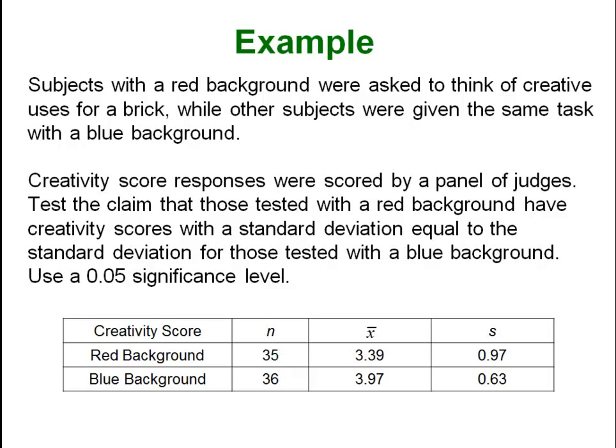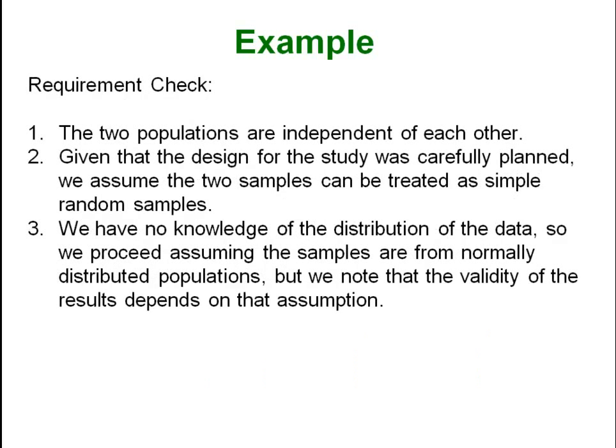Here is an example using creativity score data. We use a 0.05 significance level to test the claim that people who did this test with a red background had creativity scores with a standard deviation equal to the standard deviation for those tested with a blue background. The claim is that the two groups have equal standard deviations. We are given n, x-bar, and s for both samples. The two populations are independent, the samples are simple random samples, and since we only have summary statistics we will assume normality.